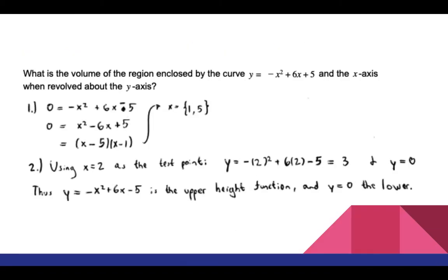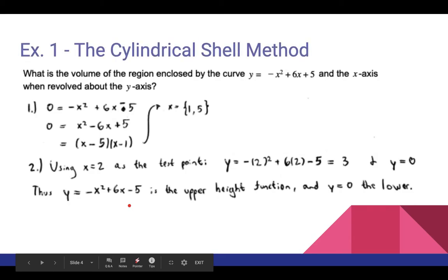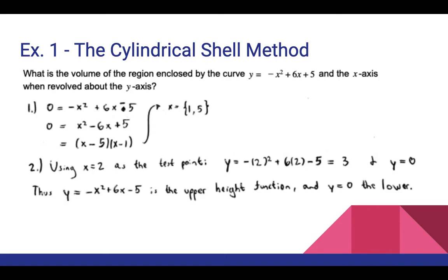For Example 1, we find the volume of the region enclosed by y equals negative x squared plus 6x plus 5 and the x-axis when revolved about the y-axis. Since we're dealing with functions of x revolved around the y-axis, we use the Shell Method. We set y equals 0 equal to y equals negative x squared plus 6x plus 5, giving us 0 equals negative x squared plus 6x minus 5, or x squared minus 6x plus 5 equals 0. Factoring gives us (x minus 5)(x minus 1) equals 0, so x equals 1 and x equals 5 are our bounds of integration.